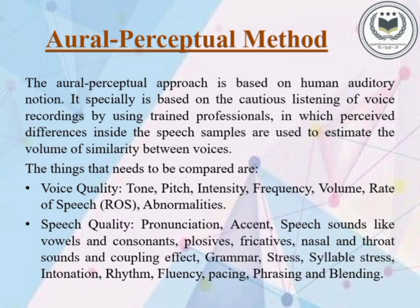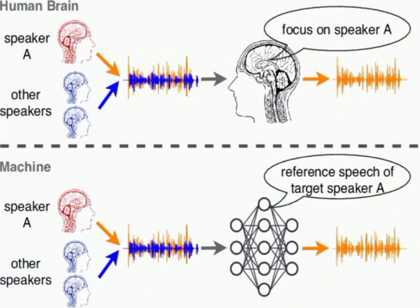The oral perceptual approach is based on human auditory perception. It is based on the careful listening of voice recordings by trained professionals, in which perceived differences in the speech samples are used to estimate the degree of similarities between voices. In this comparison, there are two things: voice quality and speech quality. Voice quality includes tone, pitch, intensity, frequency, volume of speech, abnormalities, rate of speech, etc. Speech quality includes pronunciation, accent, speech sounds like vowels and consonants, nasal and throat sounds, coupling effect, grammar, stress, syllables, intonation, rhythm, fluency, pacing, phrasing, and blending.